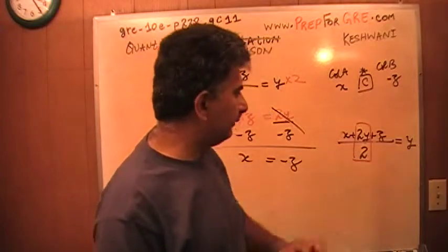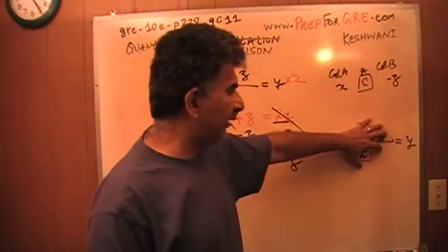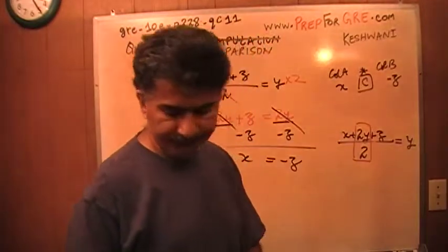2y over 2 is y, of course, right there. That's the only way you're going to get this expression to be equal to y. That's it.